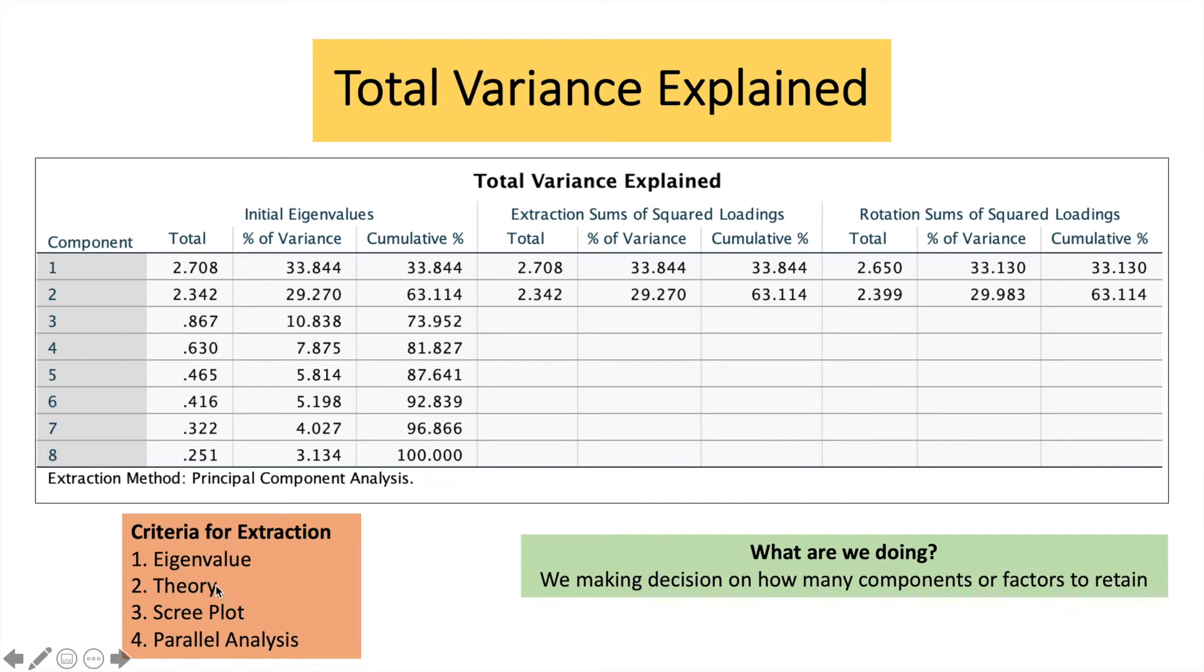The second method is using theories. You can refer back to your theoretical model in order for you to justify your factors. What I'll be doing now, I'll be moving to the third criteria, which we can use in order for us to decide how many factors to retain. We can use the scree plot.